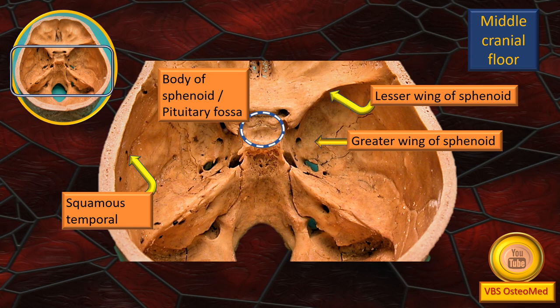Next, you can see there are two flashing arrows. The curved larger flashing arrow represents the lesser wing of the sphenoid — we covered it in the anterior cranial floor. The posterior border of the lesser wing of the sphenoid demarcates the anterior from the middle cranial floor. It is a reasonably sharp border.